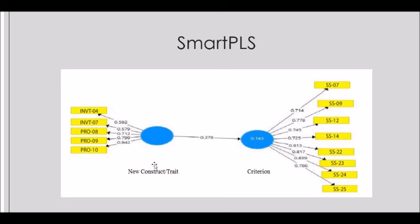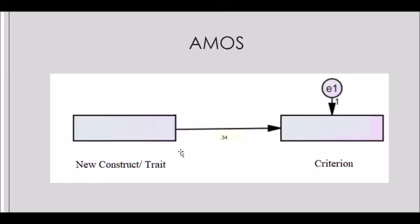If you want to test predictive validity in AMOS, you will create a path model. Place your new construct as the independent variable and the criterion as the dependent variable, then run the path model and check the beta coefficient. Here it is 0.34, which is significant. Therefore, evidence of predictive validity of the new construct will be established. I have clearly explained what to do if you are using prototypical epistemological processes and what to do if you are using ontological processes.